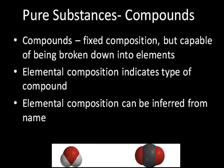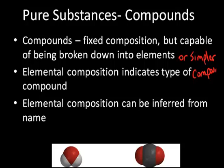For compounds, although they're made of different atoms of different elements, they do have a fixed composition. For example, water always has one oxygen in a ratio to two hydrogen atoms — no matter where you sample it from. Compounds are capable of being broken down into elements or simpler substances by chemical means. The elemental composition indicates the type of compound and can be inferred from the name.